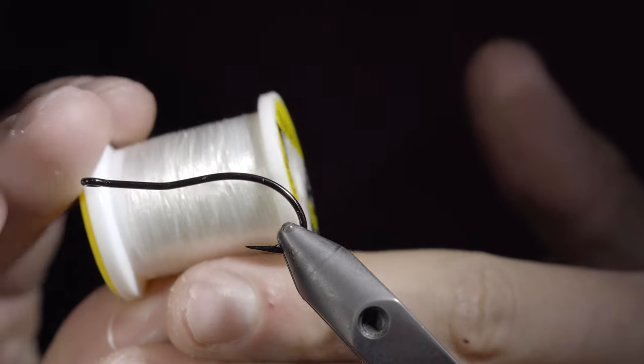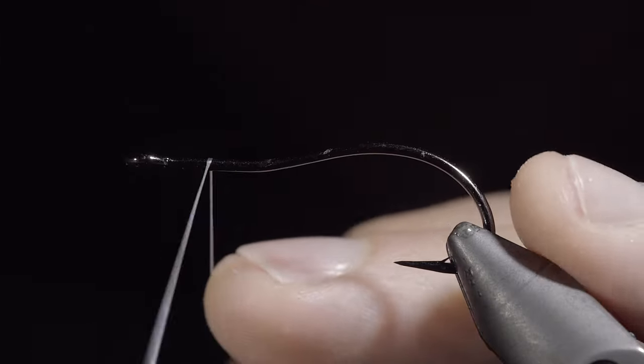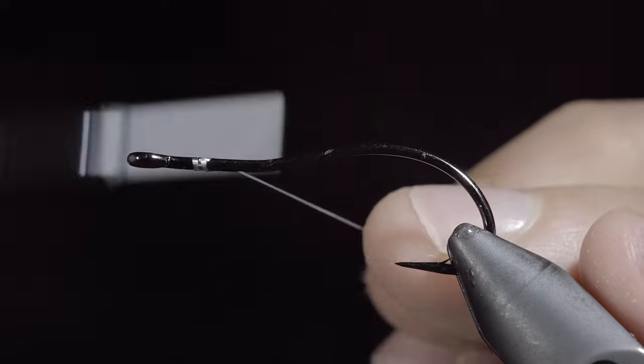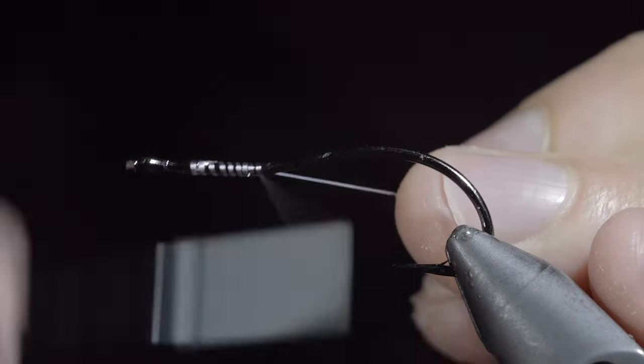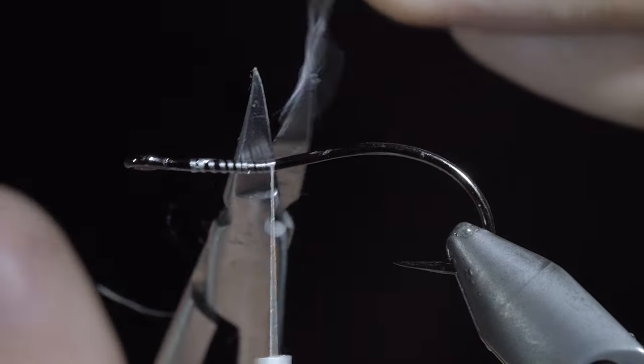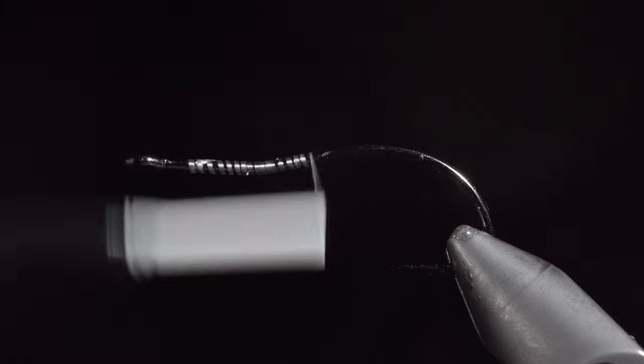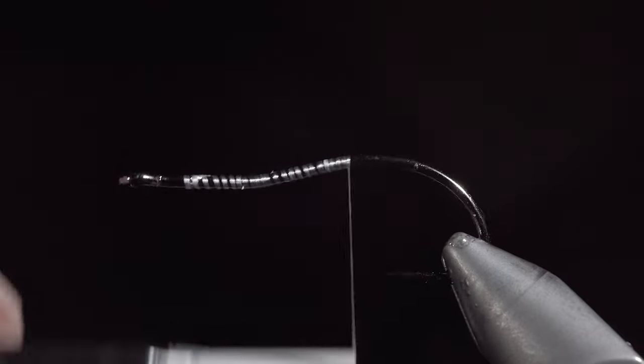We're going to be creating a glass shrimp. To start this pattern we'll grab some white UTC and secure that to our hook shank. Here we'll be using a special curved hook made by Anthrax. Snip your excess thread free and continue wrapping into the bend of the hook.